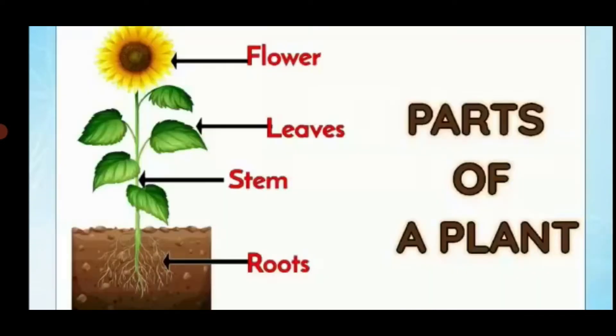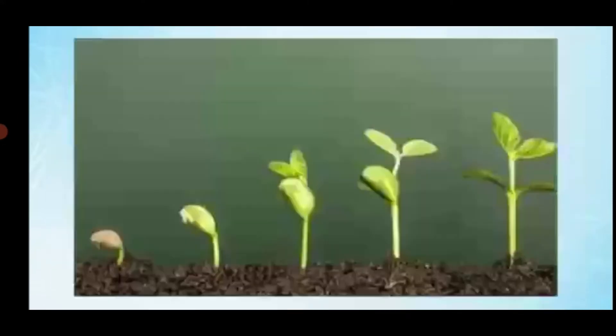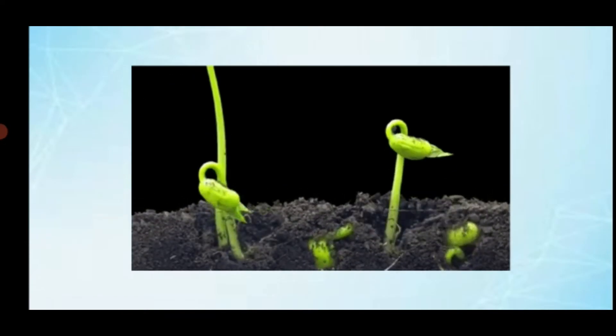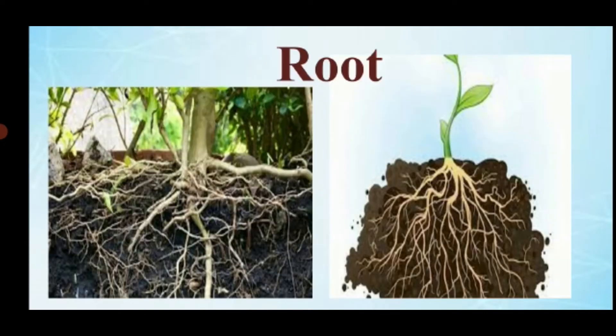Now let us learn about parts of a plant. Every plant has flower, leaf, stem and root. Now we are seeing root — this is one of the parts of a plant. It grows under the soil.